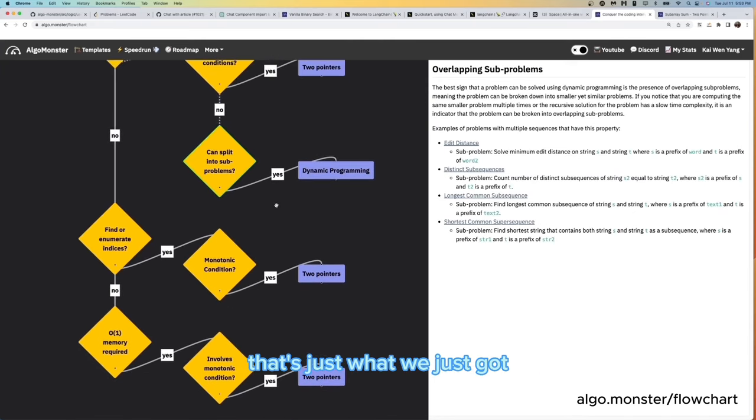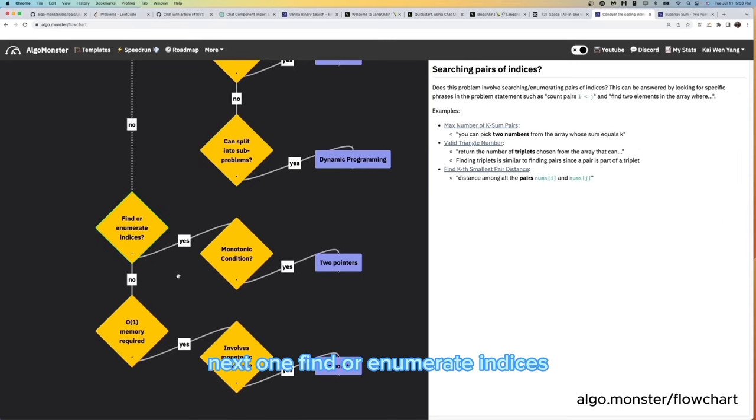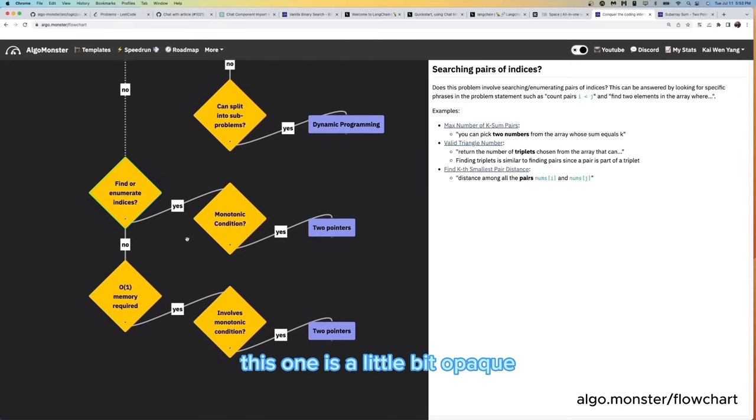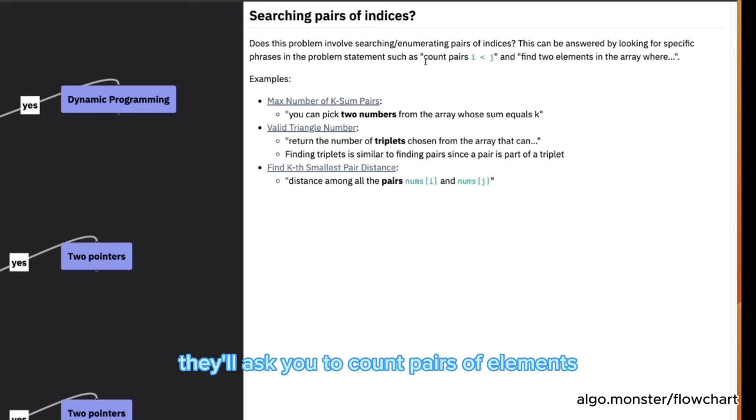Right. And kind of split into some problem. That's just what we just got DP, right? Wait a lot. Next one, find or enumerate indices. This one is a little bit opaque. What does this mean? So this one is a bit rare. Essentially, for this type of problem, they'll ask you to count pairs of elements in the way that satisfy some property. Usually they'll ask you to identify a pair of elements that satisfy some property. For example, twosum. Or they may ask you to count the number of pairs that satisfy some property. And for problems that fall in this category, it could be count pairs or something, count triplets. Anything similar to that. For example here, pick two numbers that satisfy this property. Find number of triplets, pairs here, anything like that you would put in this category.